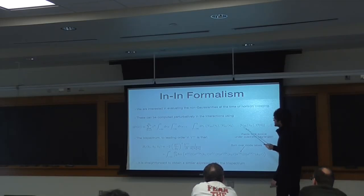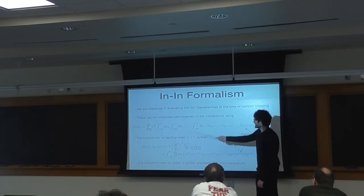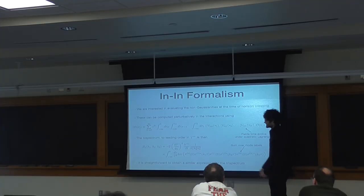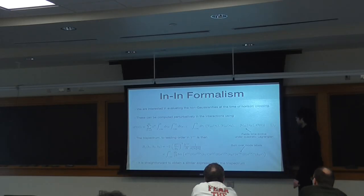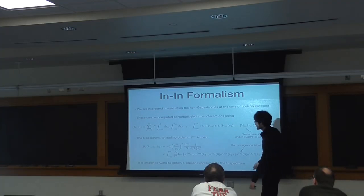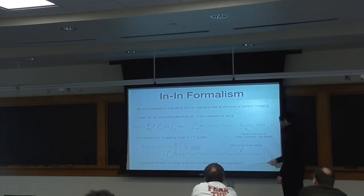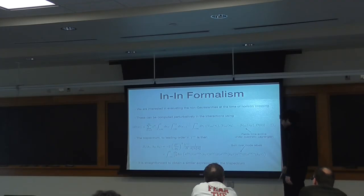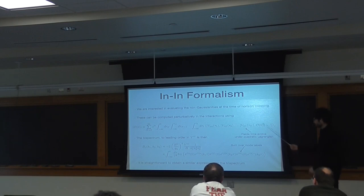This is the in-in formalism. We're going to compute these non-Gaussianities as an in-in correlator. Here is the expression for the in-in correlator of some operator in terms of the interaction picture fields. To get the leading-order bispectrum, we just insert the first-order term and evaluate a couple of contractions. One can find that the bispectrum has a momentum-dependent factor up front times a time integral of the interaction picture mode functions. It's a compact expression. It's straightforward to obtain a similar expression for the trispectrum, just with a few more contractions.